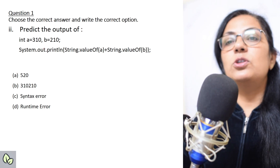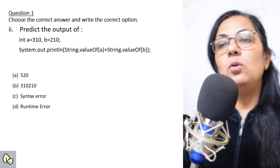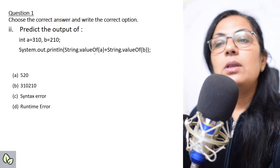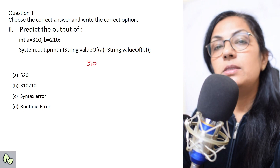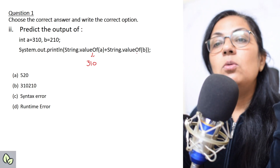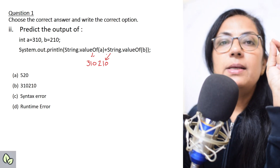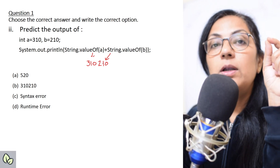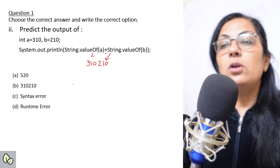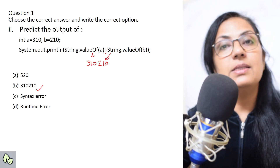The next question: predict the output. int a = 310, b = 210. The print statement uses String.valueOf(a). String.valueOf() converts different data types into String type. So String.valueOf(a) gives "310" as a String, and String.valueOf(b) gives "210" as a String. String plus String does not add these numbers — it does concatenation. The plus operator here combines both strings, so the correct answer is "310210", not the addition of 310 and 210.